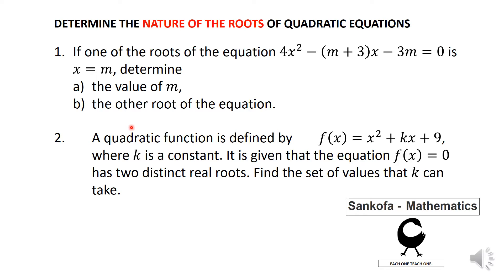I've just selected two questions here. The first one is: if one of the roots of the equation 4x² minus (m+3)x minus 3m equals 0 is x = m, you need to determine the value of m, and then find the other root of the equation.